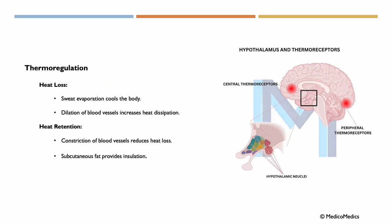Now let's talk about another function, which is thermoregulation. To get heat loss, we have sweat evaporation, which cools the body by absorbing heat as sweat transitions from liquid to vapor. Another way is dilation of blood vessels near the skin surface, which increases heat dissipation by enhancing blood flow to the skin.